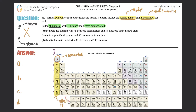You can always identify an element by its atomic number, which never changes — electrons and neutrons can change, but protons never do. This element has 11 protons, which is sodium. So for part a: Na with mass number 23 on top and atomic number 11 on the bottom.